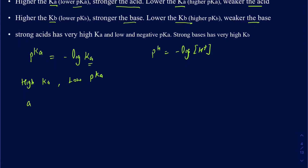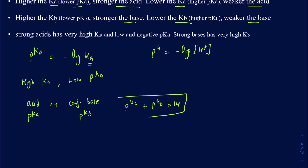If I have an acid and I'm talking about the conjugate base of that acid, how do I relate their pKa and pKb? The acid has a pKa and the conjugate base has a pKb. I can relate them for an acid-conjugate base pair by the equation: pKa + pKb = 14. This is something you probably learned in Gen Chem 2, though it's not very commonly used in organic chemistry.